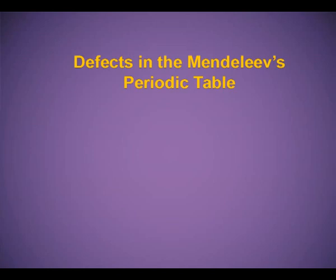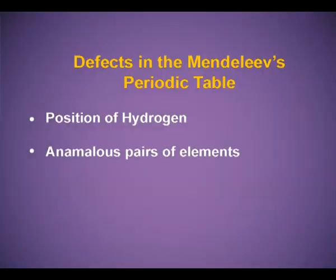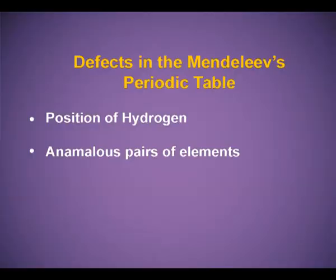Defects in the Mendeleev Periodic Table: Position of Hydrogen — hydrogen resembles in its properties the alkali metals as well as halogens. Its position was disputed and its correct position was not allotted in the Mendeleev periodic table. Anomalous pair of elements — elements with a higher atomic weight were placed before elements with a lower atomic weight. For example, iodine with atomic weight 127 was placed before tellurium with atomic weight 128. This was a defect in the Mendeleev periodic table.